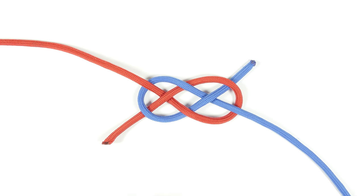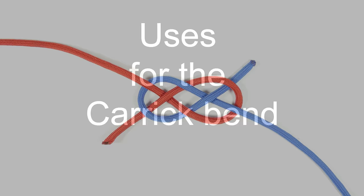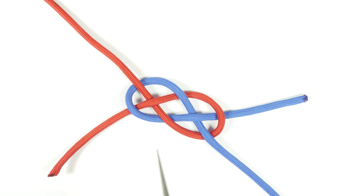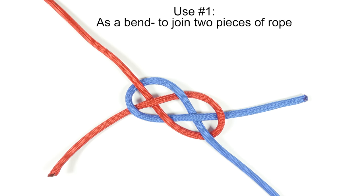Now, let's take a look at the uses for the Carrick Bend. When working with rope, bends are usually used to join pieces of rope together. So the Carrick Bend probably does not surprise when you learn that it can be used to join two pieces of rope together.